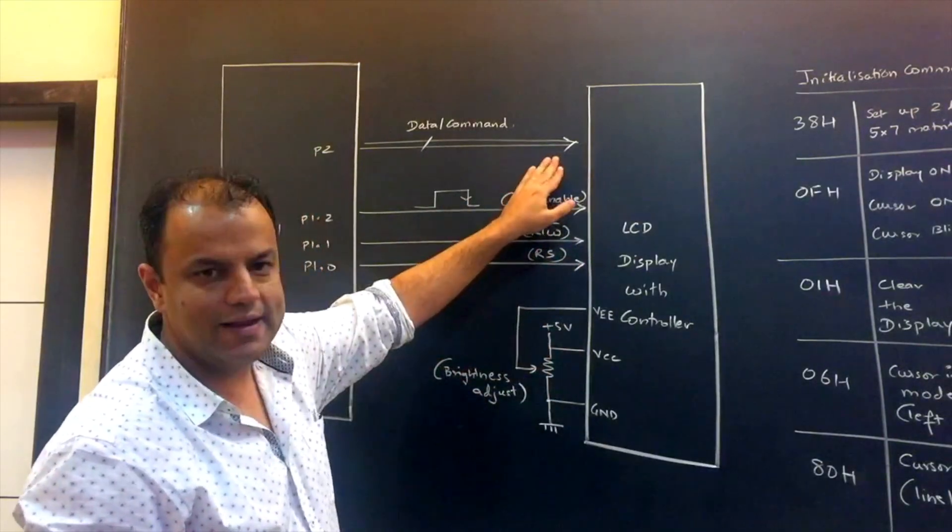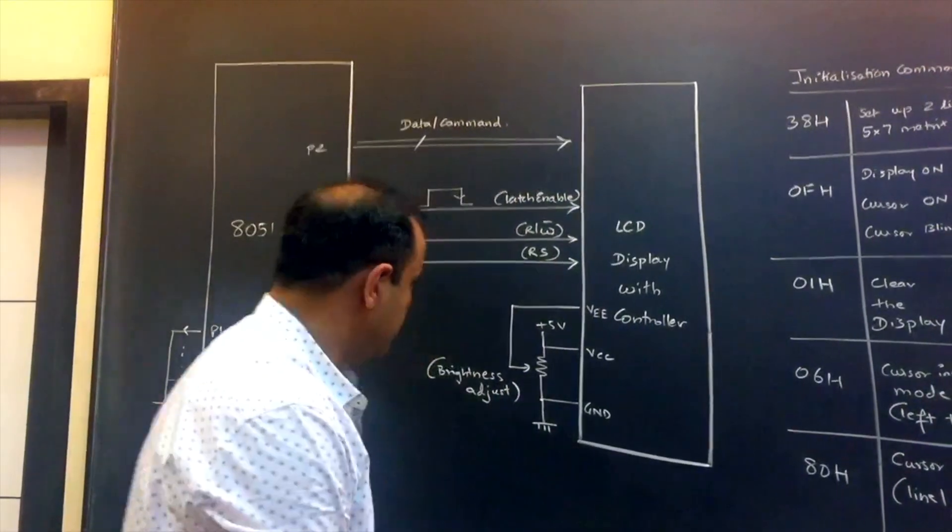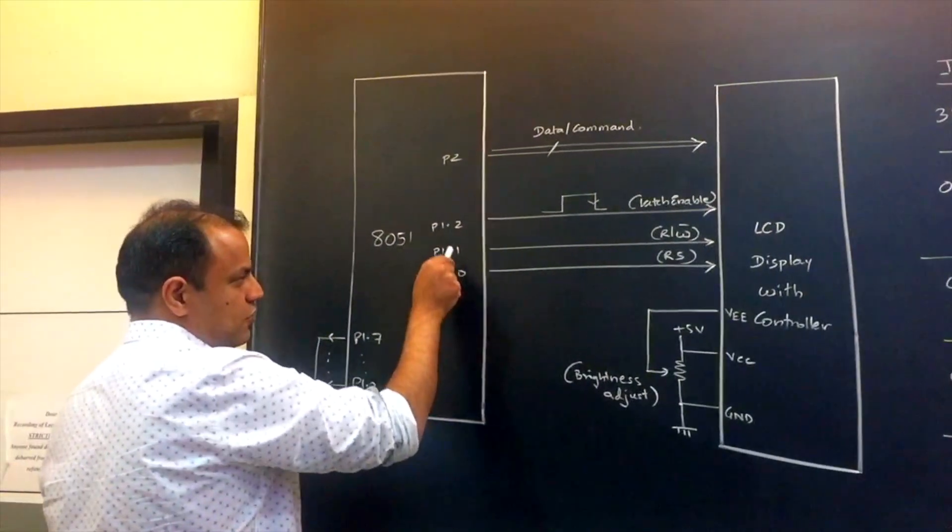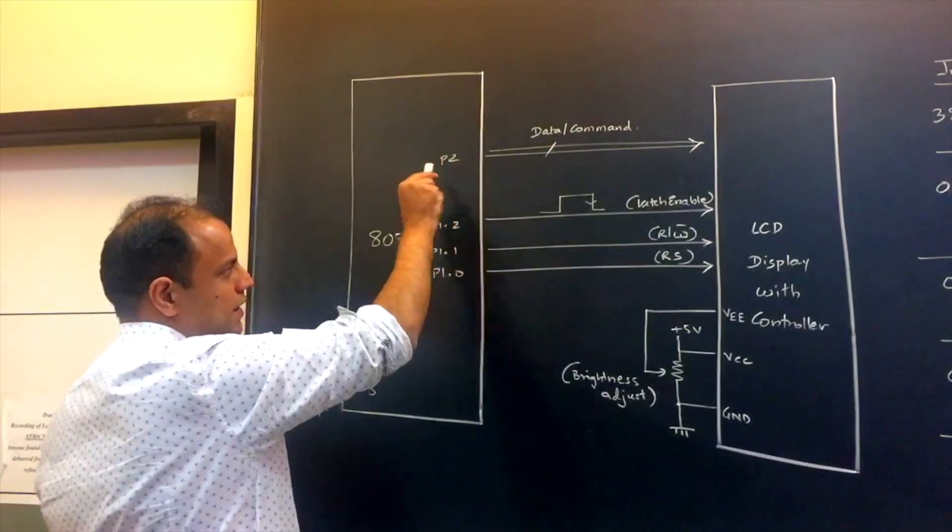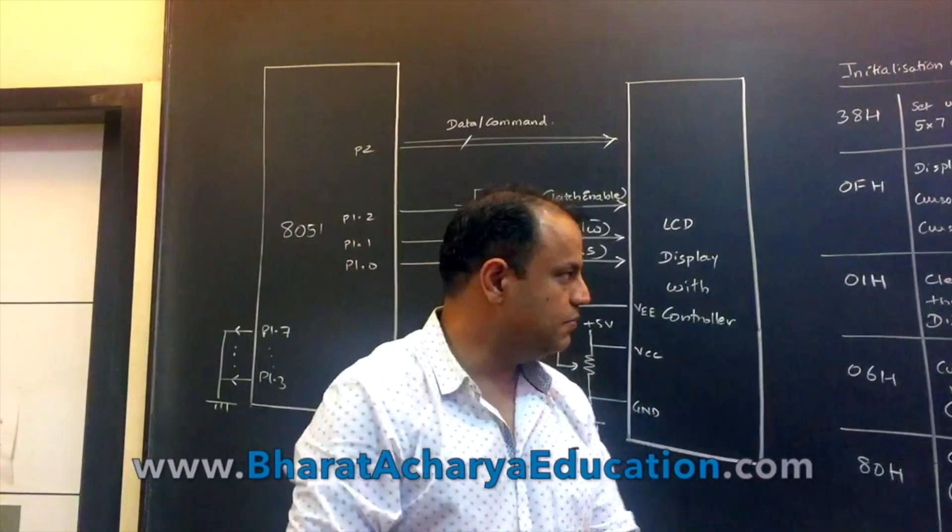So that was the interface. Ground, VCC, brightness control, register select to decide whether you're sending data or command. R slash W bar to decide whether you're going to read or write. We will always write. And latch enable to latch whatever you send. So these are 1, 2, 3, 4, 5, 6 and 8 bits of data or command. We've connected these individual lines on port 1 and we've connected the data command line on the whole of port 2.